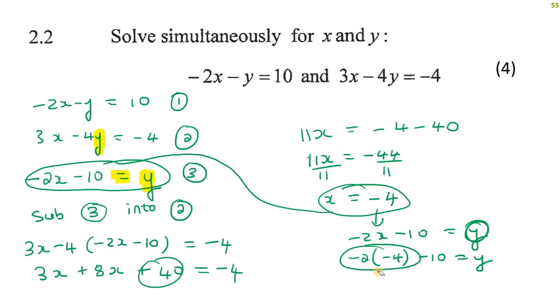And so that'll give me positive 8 and then this will give me negative 2. So x is negative 4 and y is negative 2.